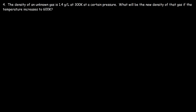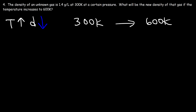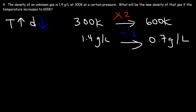Now what about this one? The density of an unknown gas is 1.4 grams per liter at 300 Kelvin at a certain pressure. What will be the new density if the temperature increases to 600 Kelvin? If the temperature goes up, the density will decrease. If you double the temperature, the density will decrease by a factor of 2. The temperature increases from 300 Kelvin to 600 Kelvin, so it increased by a factor of 2. Therefore, the new density is 1.4 divided by 2, which is 0.7 grams per liter.